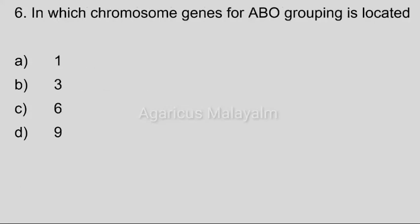Sixth question: In which chromosome is the gene for ABO grouping located? Answer options — Option A: 1. Option B: 3. Option C: 6. Option D: 9. Correct answer: Option D, chromosome 9.